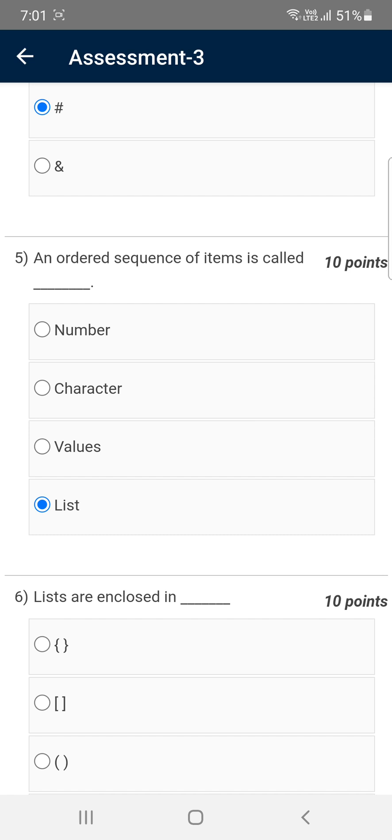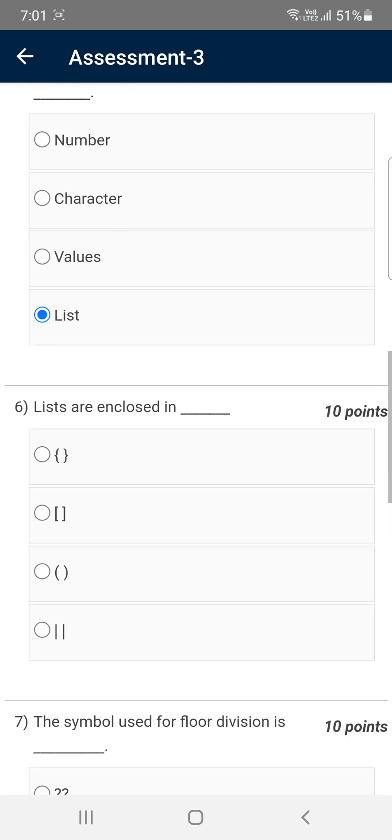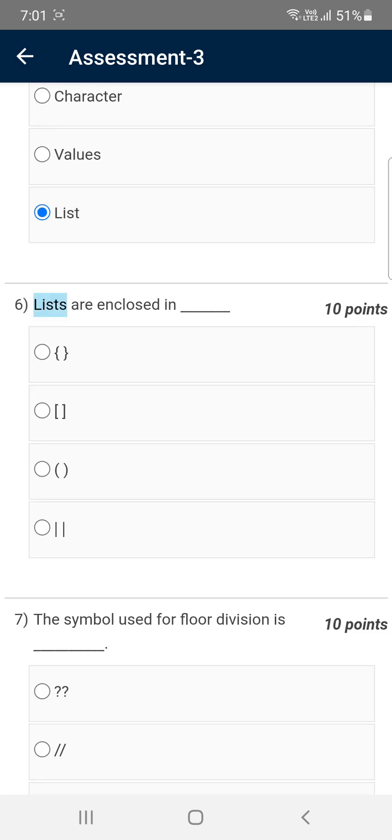Moving on to the sixth question: Lists are enclosed in... lists are enclosed in square brackets, that means second option. The third option is about tuple and the first one is about dictionaries. So the answer is second option which is for list, that is square brackets.